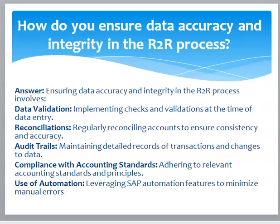How do you ensure data accuracy and integrity in the R2R process? Answer: Ensuring data accuracy and integrity in the R2R process involves: data validation — implementing checks and validations at the time of data entry; reconciliations — regularly reconciling accounts to ensure consistency and accuracy; audit trails — maintaining detailed records of transactions and changes to data; compliance with accounting standards — adhering to relevant accounting standards and principles; and use of automation — leveraging SAP automation features to minimize manual errors.